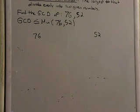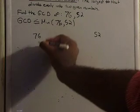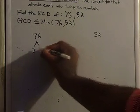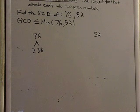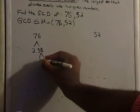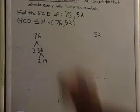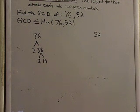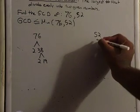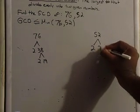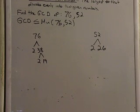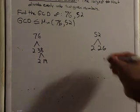So what times what can give you 76? I got 2 and 38. And then 38 can be broken down to what? 2 and 19. All those are prime. And then what about 52? What times what can give us 52? I got 2 and 26. And then 26 can be broken down to 2 and 13. 2 times 13.